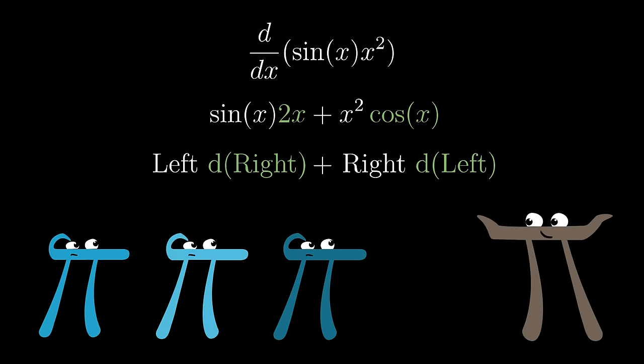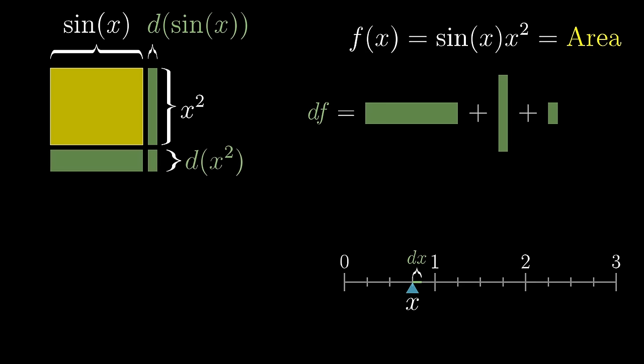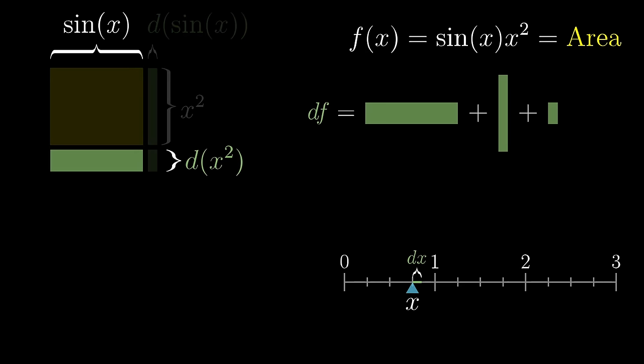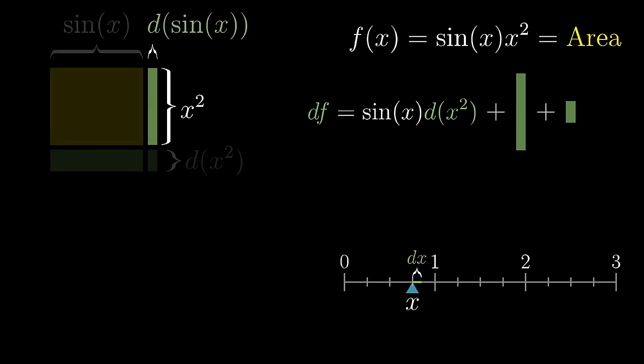Now, out of context, presented as a rule to remember, I think this would feel pretty strange, don't you? But when you actually think of this adjustable box, you can see what each of those terms represents. Left d right is the area of that little bottom rectangle, and right d left is the area of that rectangle on the side.